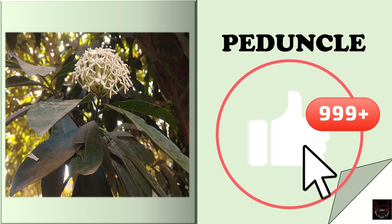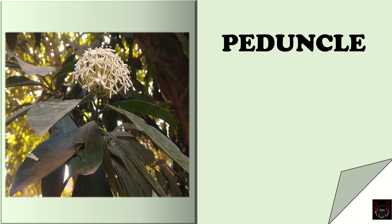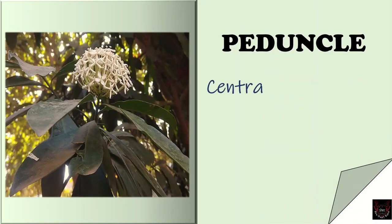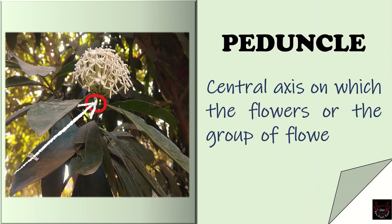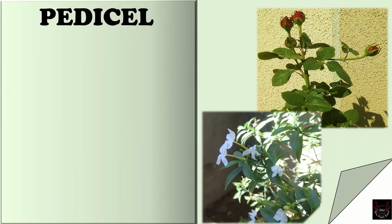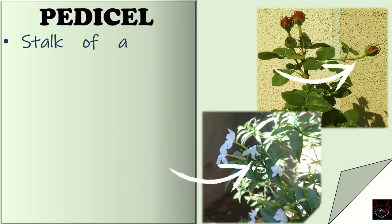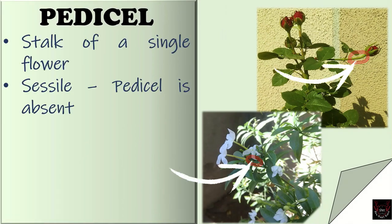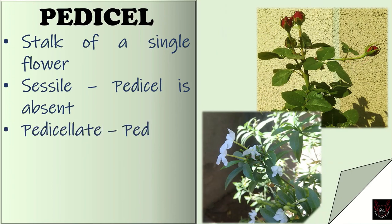First is peduncle. Peduncle is the central axis on which the flowers or the group of flowers are produced. Next is pedicel. Pedicel is the stalk of a single flower. When pedicel is absent, the flowers are called sessile.